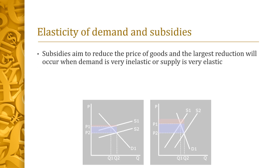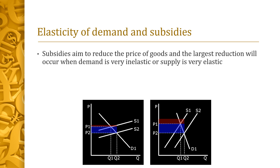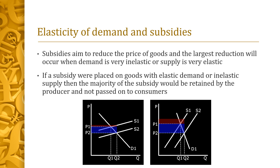Subsidies aim to reduce the price of goods, and the largest price reduction will occur when demand is very inelastic or supply is very elastic. If a subsidy were placed on goods with elastic demand or inelastic supply, then the majority of the subsidy would be retained by the producer and not passed on to the consumers.